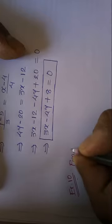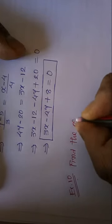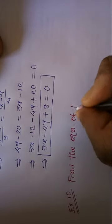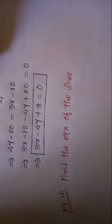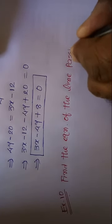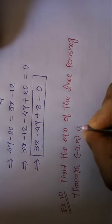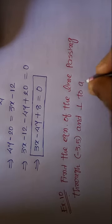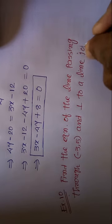Next, example number 10. Find the equation of the line passing through (-3, 5) and perpendicular to a line joining the points (2, 5) and (-3, 6).